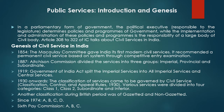In 1909, the Government of India Act split civil services into imperial services and central services. Through the Government of India Act 1935, various services were divided into four categories: Class I, Class II, subordinate, and inferior. Another classification was gazetted and non-gazetted.